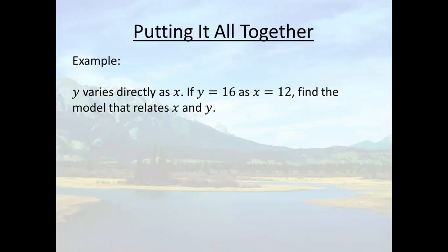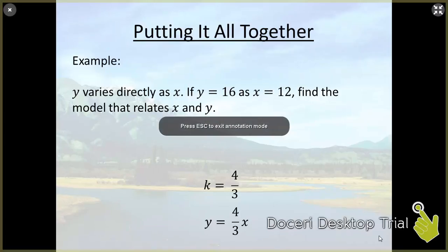Okay, so we found that k is 4 thirds. And then what they're asking for is what is the model that relates x and y. So we just rewrite the formula y equals kx but we plug 4 thirds in for k. That's it. That right there would be our final answer.